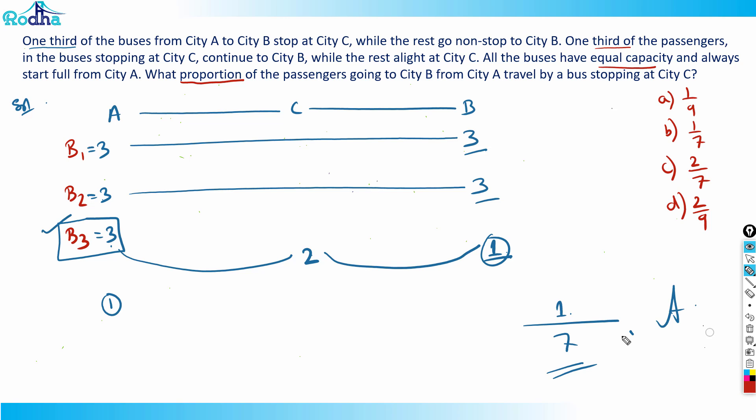In an exam, if we've got 28 questions of quant - suppose there are eight or nine questions of DI - and let's say there are 20 questions of quant. Out of 20 questions in quant, around 50% are easy to moderate category, but that's what people are not able to find in the paper.